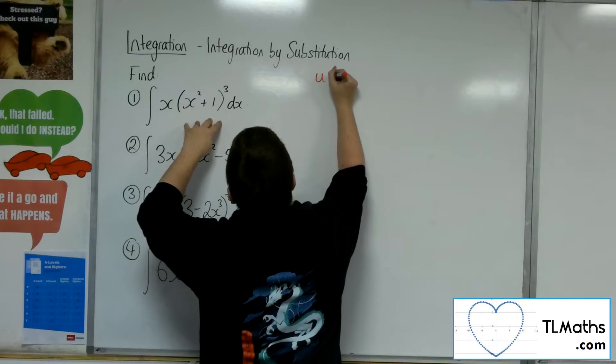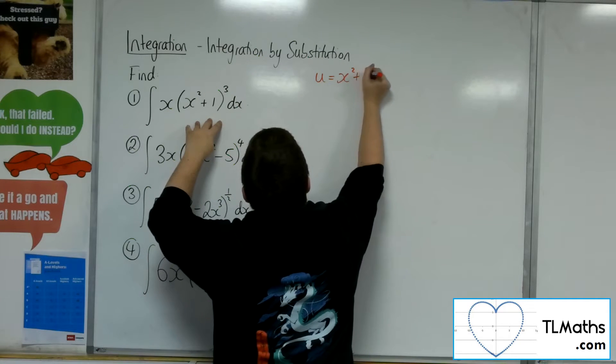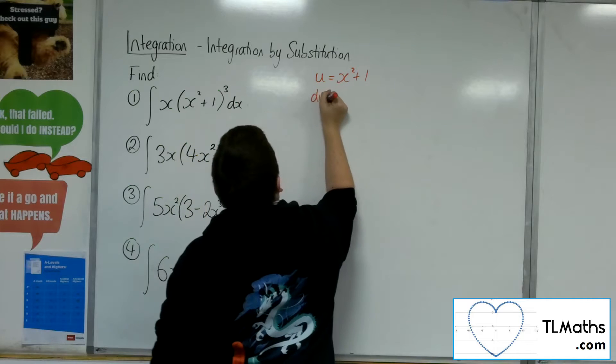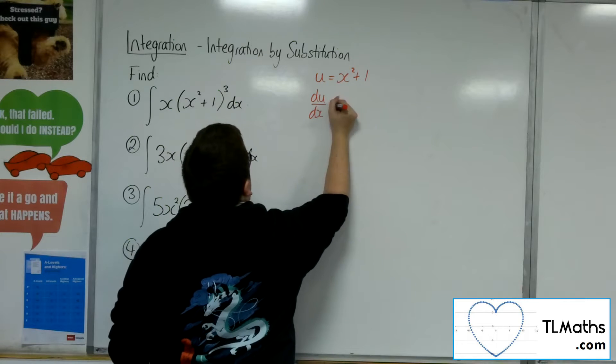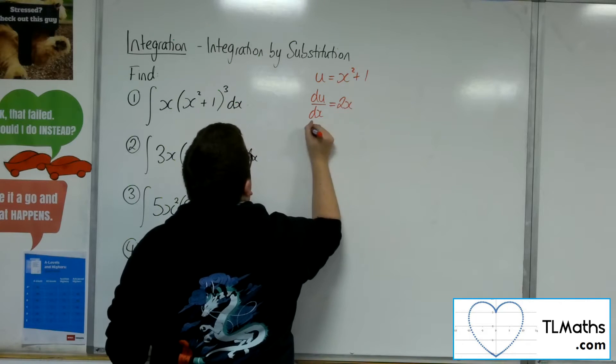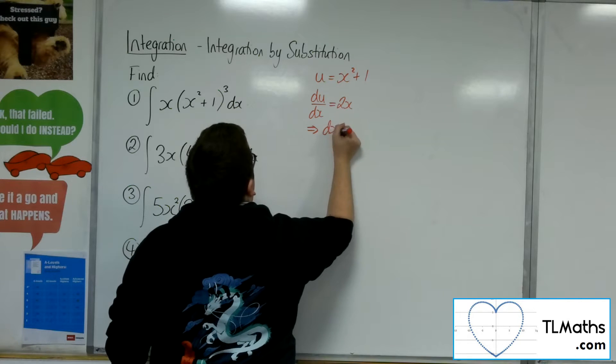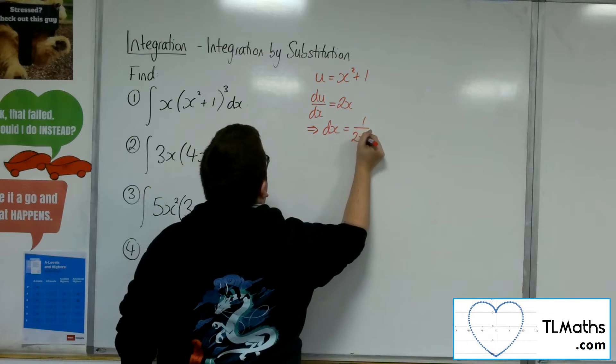So u equals x squared plus 1. You always differentiate that, so du by dx is 2x. Rearrange it to get dx, so dx is 1 over 2x du.